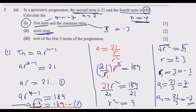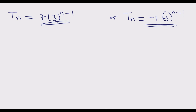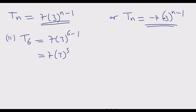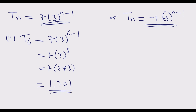For number 2, we find the sixth term: T_6 = 7 × 3^(6−1) = 7 × 3^5. Since 3^5 = 243, we get T_6 = 7 × 243 = 1701. You can use either formula and you'll get the same answer.